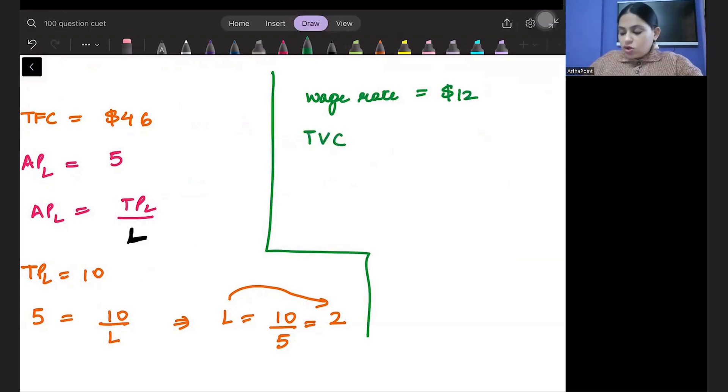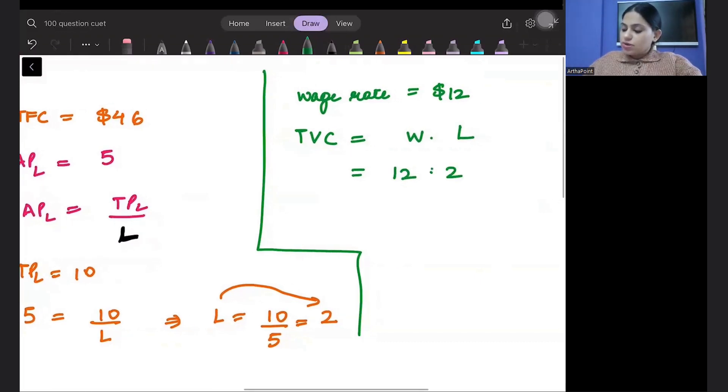So total variable cost will be cost of labour. Labour cost will be wage rate into number of labour. Wage rate is 12 into number of labour is 2. So I will get the answer as 24.